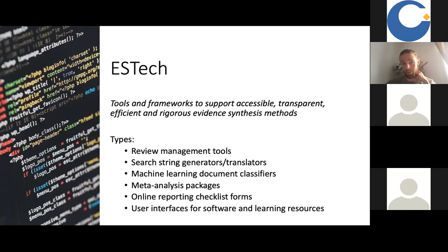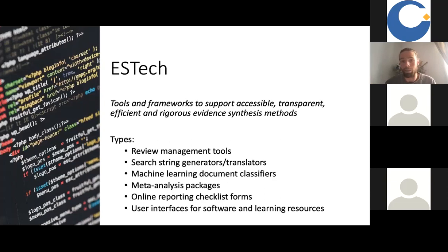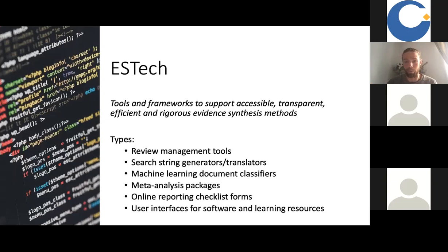Some of the types of tools I wanted to briefly mention are things like review management tools — tools that hold your hand and help you document the process throughout the steps of a review. They might be tools that help generate or translate search strings, machine learning document classifiers for include/exclude decisions or classifying studies based on predicted content, packages to support meta-analysis, online reporting checklist forms, and user interfaces for software or learning resources to improve education around systematic reviews. This is the kind of thing we're thinking about when we envisage evidence synthesis technology.